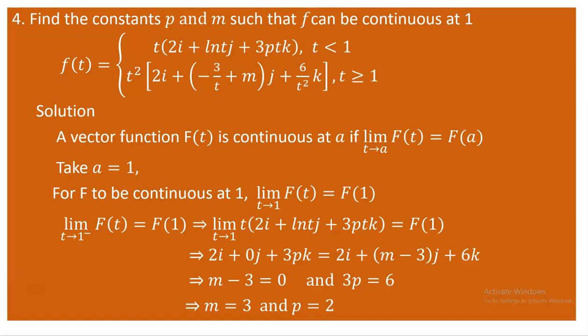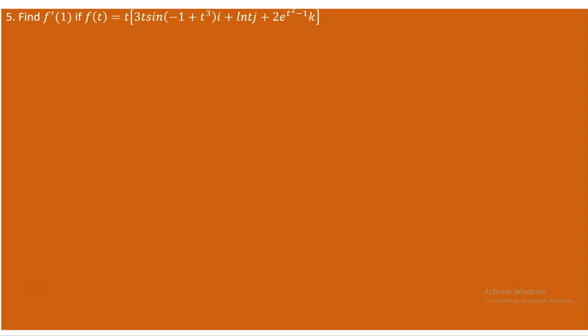To discuss continuity, you need to know the definition: for a vector function f of t to be continuous at a, the limit of f of t as t approaches a must equal f at a — that is what you need to ensure. Up next is question number 5, which is about finding the derivative of f at 1 for the given vector function.